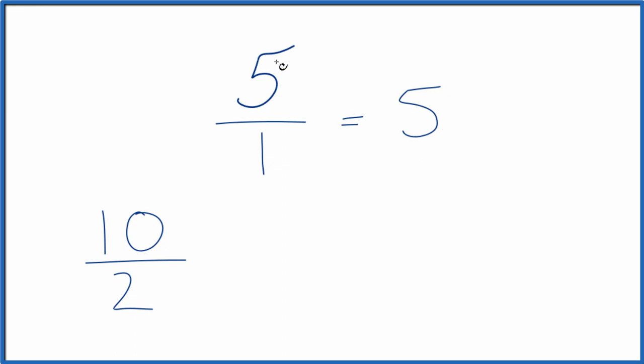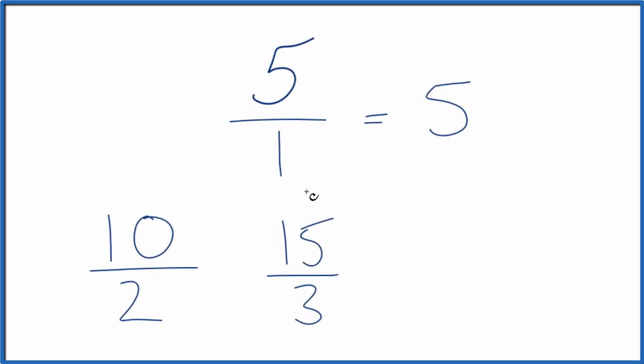How about we multiply the numerator and denominator by 3? 3 times 5, that's 15. 3 times 1 is 3. Another equivalent fraction. Let's try something like 7. 7 times 5, that's 35. 7 times 1 is 7. And these are all equivalent fractions.